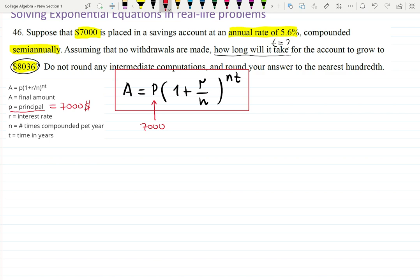We can also write down here seven thousand dollars were invested originally. Then r, the rate, is 5.6 divided by 100, that is 0.056. That's my r, but don't forget to divide by 100 percent. Then we also have n.